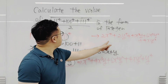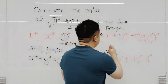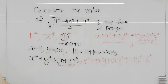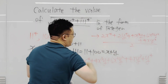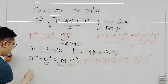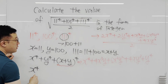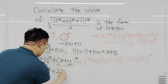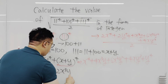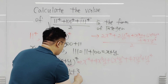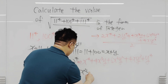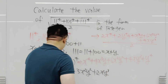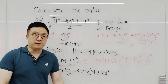We then divide this numerator by 2, simplifying the coefficients. So the expression inside the square root becomes x⁴ plus y⁴ plus 2x³y plus 3x²y² plus 2xy³. This is the expression we need to work on from now.